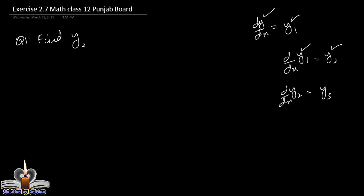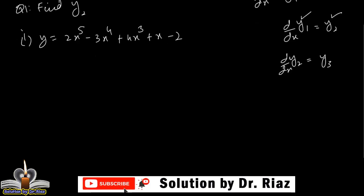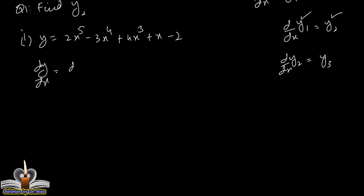تو اب ہم لکھتے ہیں first part: y is equal to 2x power 5 minus 3x power 4 plus 4x power 3 plus x minus 2. اب جب ہم differentiate کریں گے with respect to x، تو d by dx of (2x⁵ - 3x⁴ + 4x³ + x - 2).